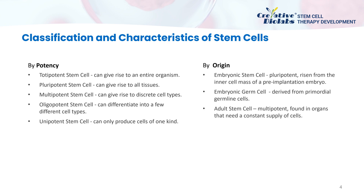Stem cells may also be classified according to their origin. There are embryonic stem cells, which arise from the inner cell mass of a pre-implantation embryo; embryonic germ cells, which are derived from primordial germline cells; and adult stem cells, which are found in organs that need a constant supply of cells, such as the bone marrow, blood, skin, adipose tissue, and lining of the gut, and surprisingly, the brain.